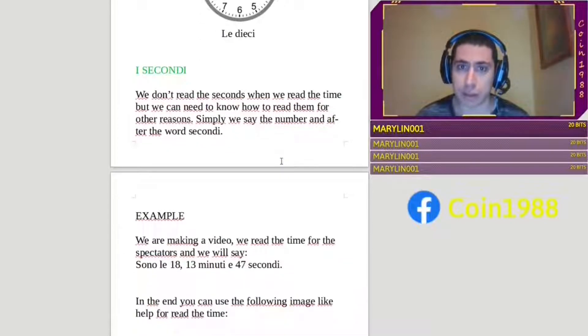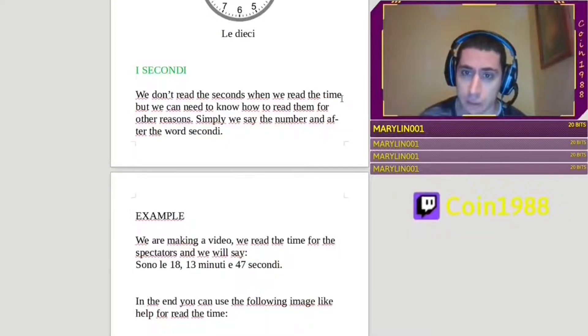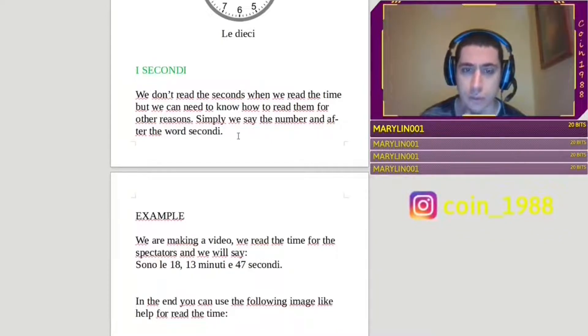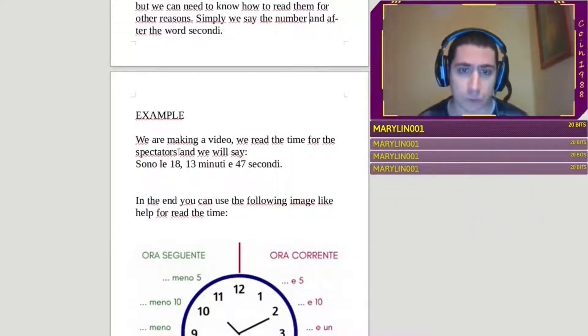The last thing in the clock are the second, i secondi. We don't read the second when we read the time, but we can need to know how to read them for other reasons. Simply, we say the number, and after the word secondi. And I did an example. We are making a video, we read the time, for the spectators, and we will say, sono le diciotto, 13 minuti, e 47 secondi.